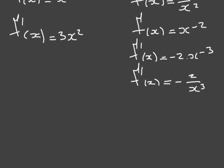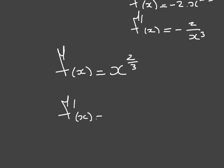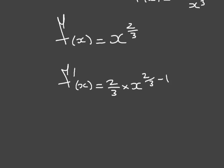But let's see what happens if we were given a function in which the power of x was a fraction. For example, if we were given f of x is equal to x to the power of 2 thirds. Luckily for us, the power rule still works here. The derivative function f dash of x is equal to 2 thirds times x to the power of 2 thirds minus 1. And 2 thirds minus 1 is equal to negative 1 third, so f dash of x is equal to 2 thirds times x to the power of negative 1 third.